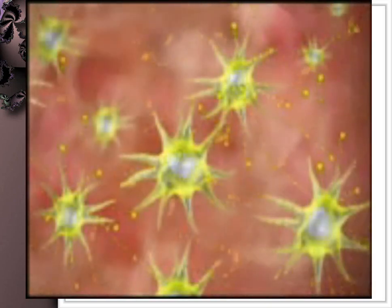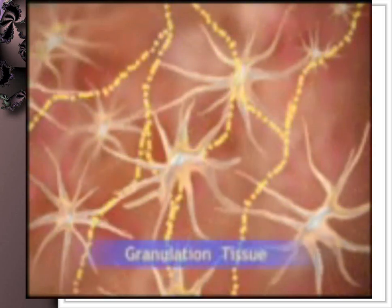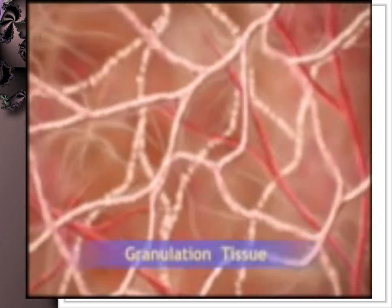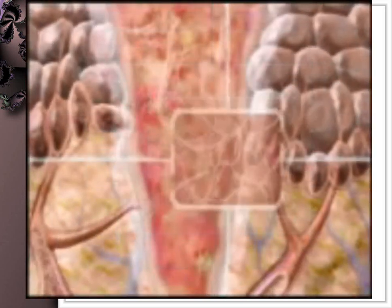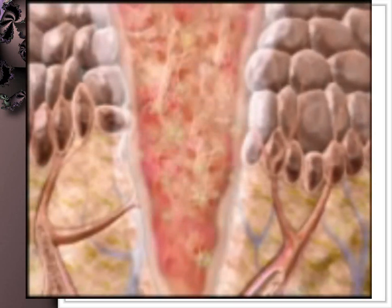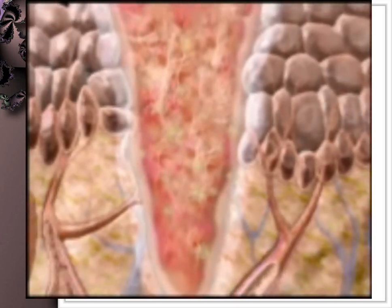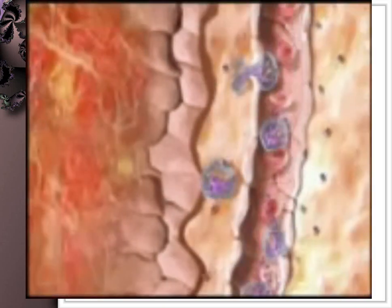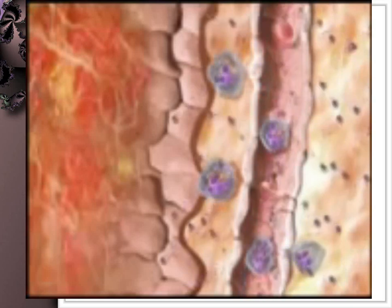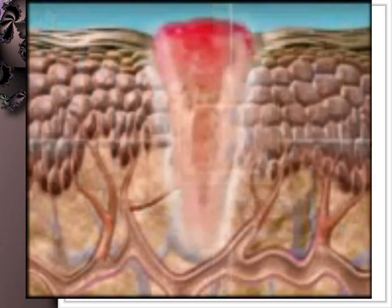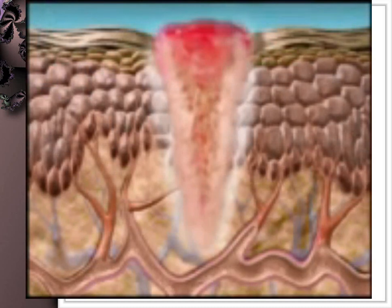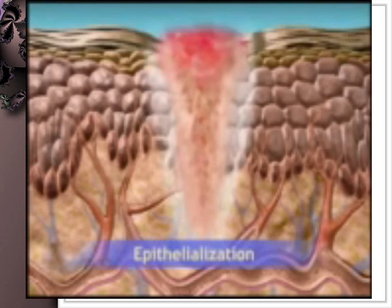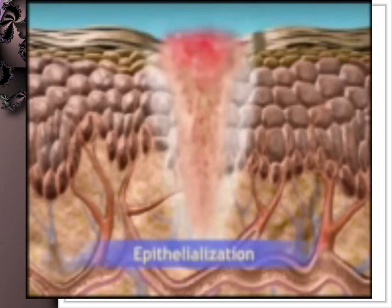The fibroblasts and endothelial cells form granulation tissue that serves as the foundation for scar tissue development. Granulation tissue contains newly developed capillary buds; the tissue is soft and pink, and because it is fragile, it bleeds easily. The newly formed blood vessels are leaky and allow plasma proteins and white blood cells to leak into the tissues.